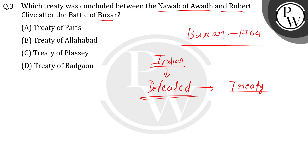Then two names come up: one is Mughal emperor Shah Alam, and the second name is Shuja-ud-Daula, who surrendered before the British.